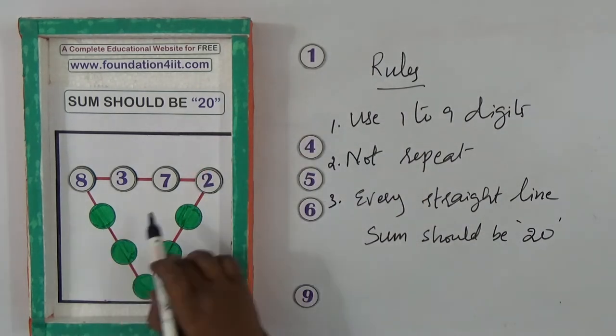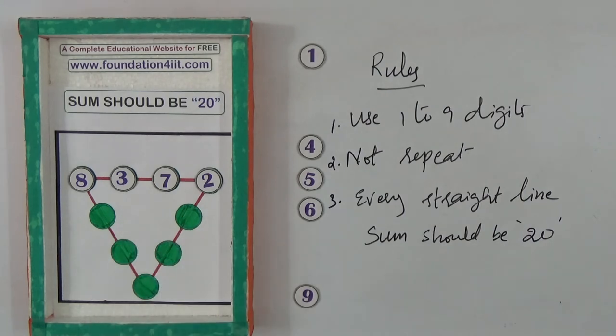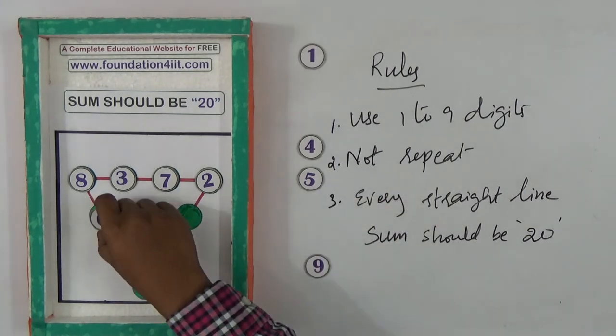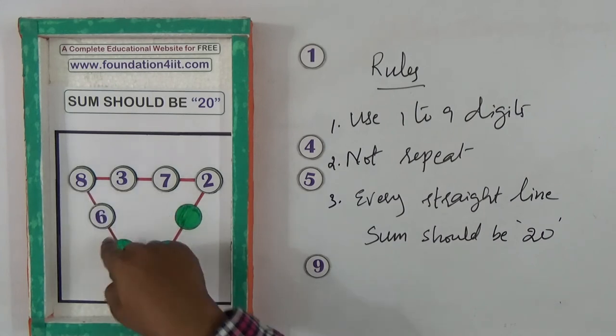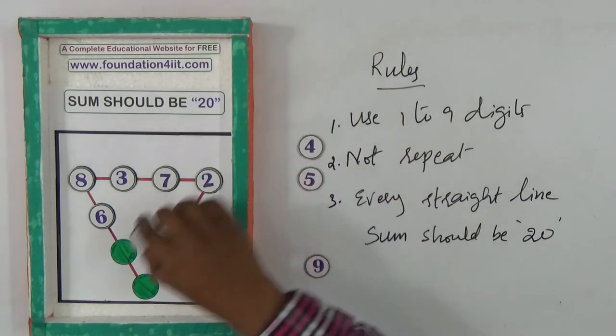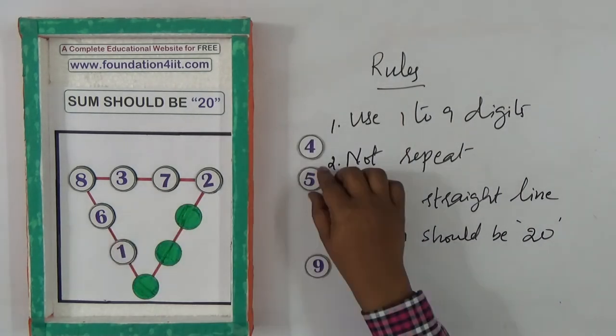Eight, three, seven, two is one straight line equaling 20. We should not repeat any number. Next, taking six because eight plus six equals fourteen, and one makes fifteen, so I need five.